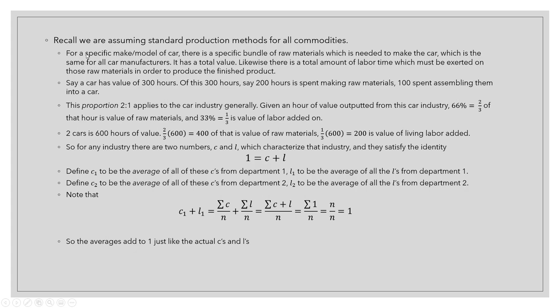Let's say we're talking about the car industry. For a specific make and model of car, there's a specific bundle of raw materials needed to make it, which is the same for all car manufacturers. This was one of our big assumptions: there are standard production techniques for making everything, so there's a specific bundle of raw materials associated with a unit of each commodity.